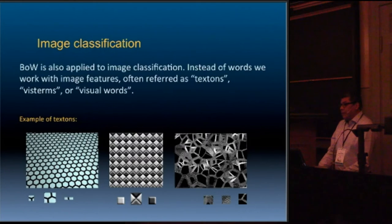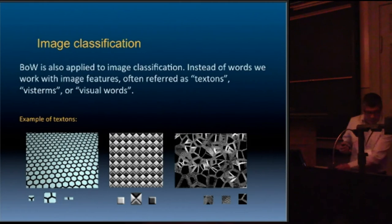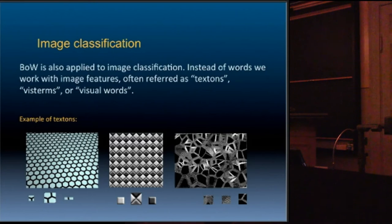In image classification the idea is this: you have images and you extract some features which are the equivalents to words. These features are called visual words or textons. In this case we have three images, three textures, and these are three features that are frequent in this image. These are different images with different features which can be the equivalent to words.